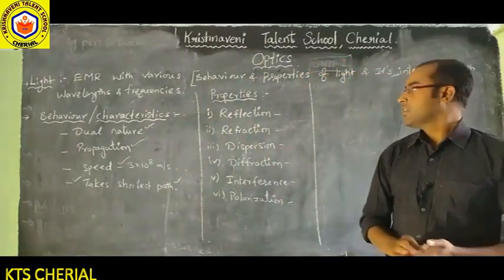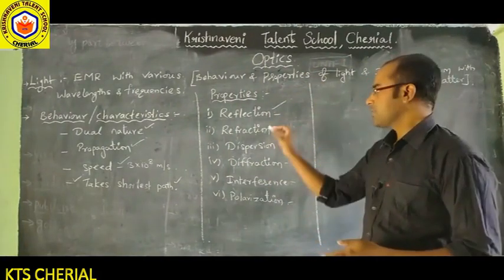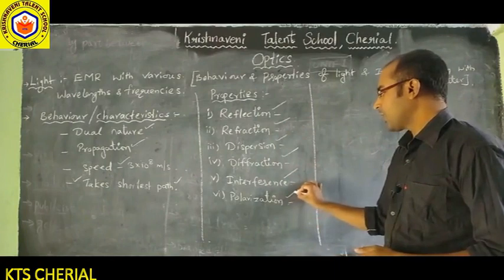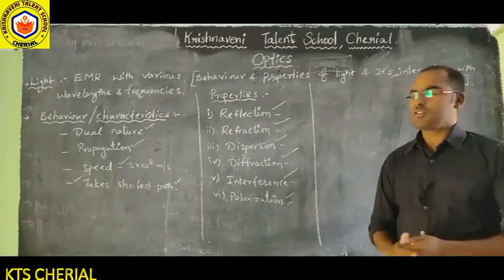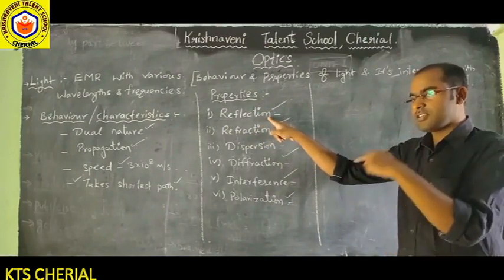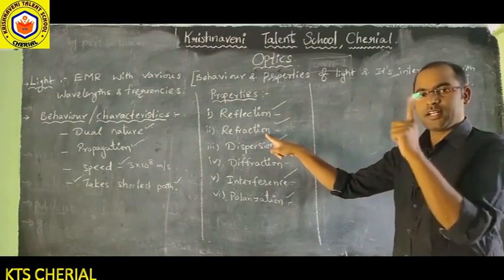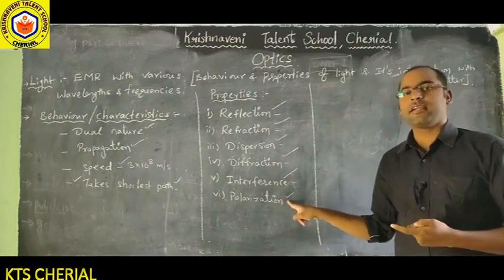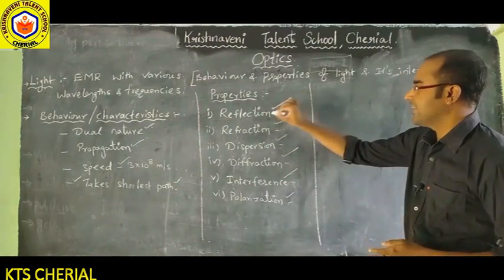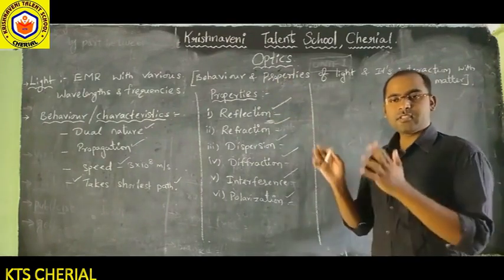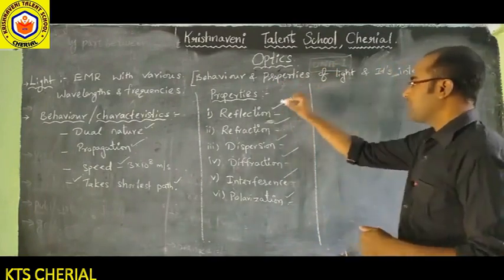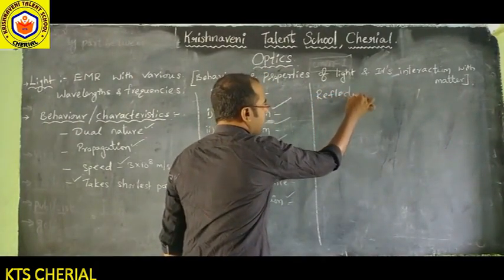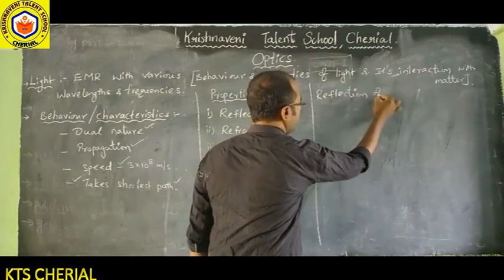The properties of light include: reflection, refraction, dispersion, diffraction, interference, and polarization. Reflection was started in 7th class, refraction was completed in 9th class, and dispersion we will learn in 10th class. Diffraction, interference, and polarization will be learned in higher classes. Now let us learn reflection of light in detail.